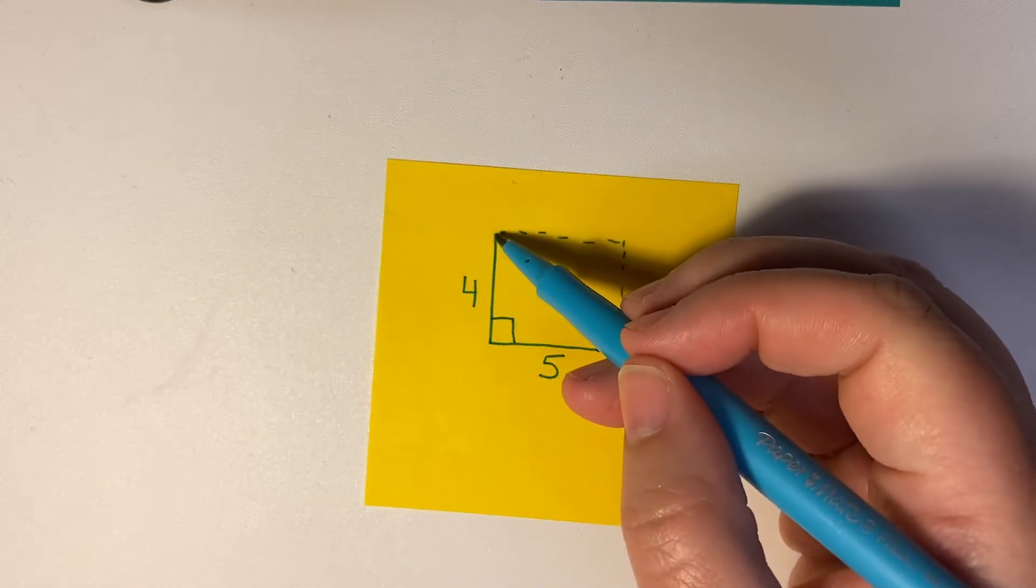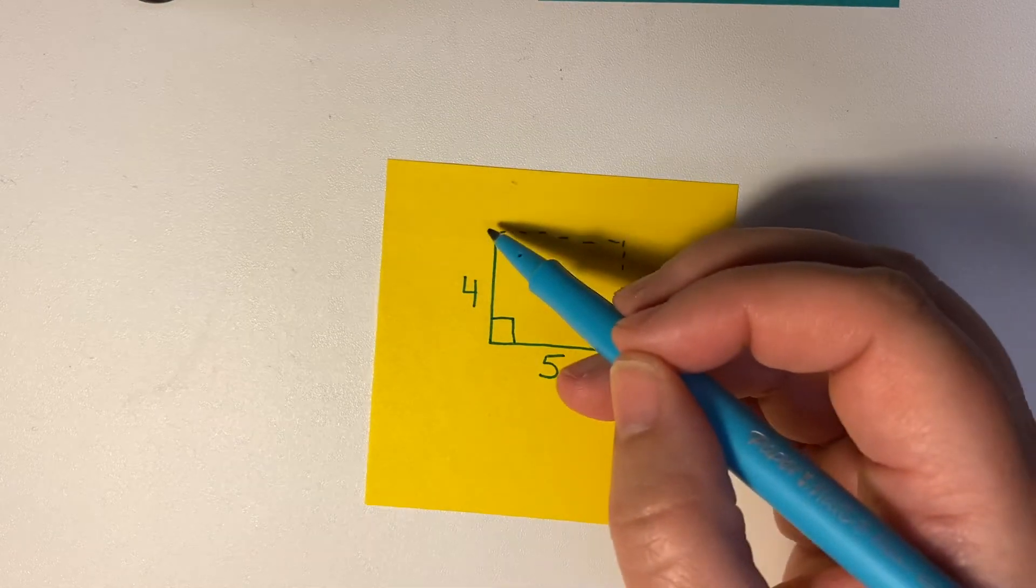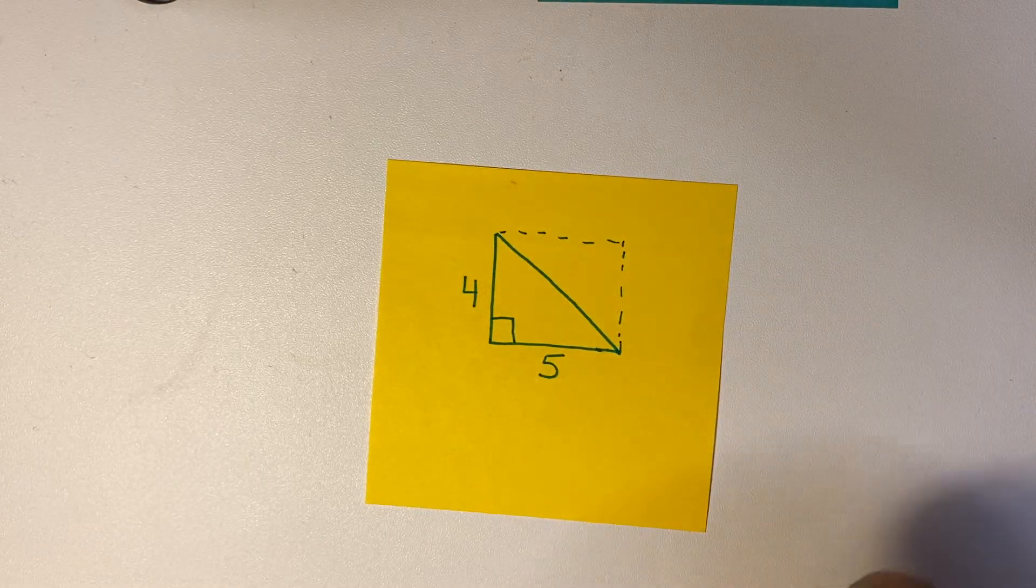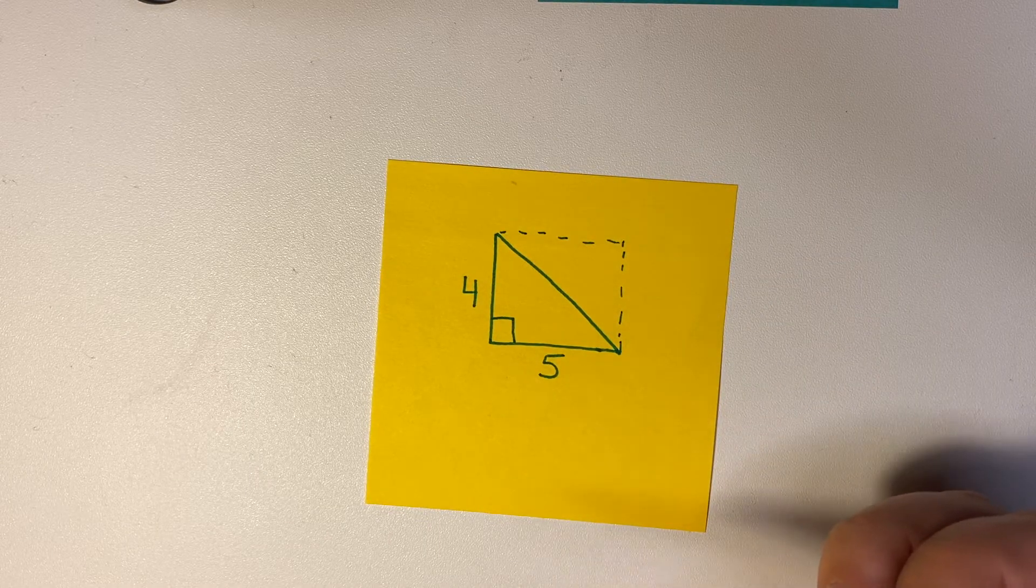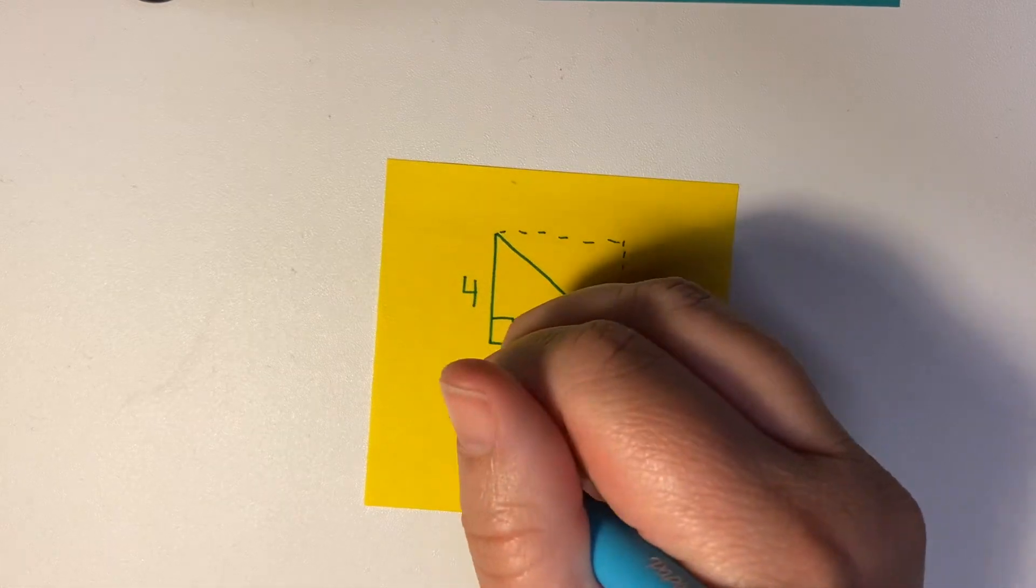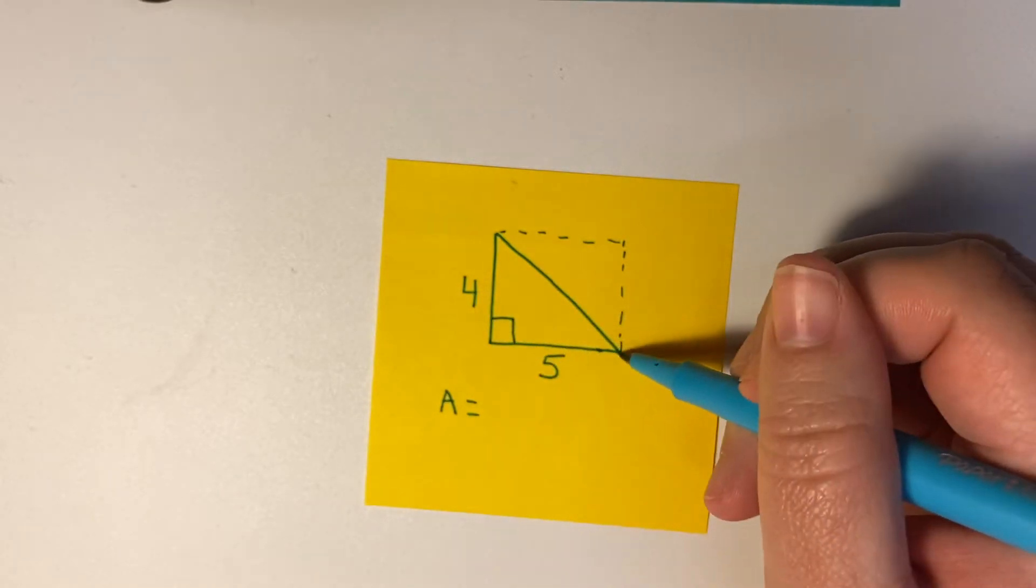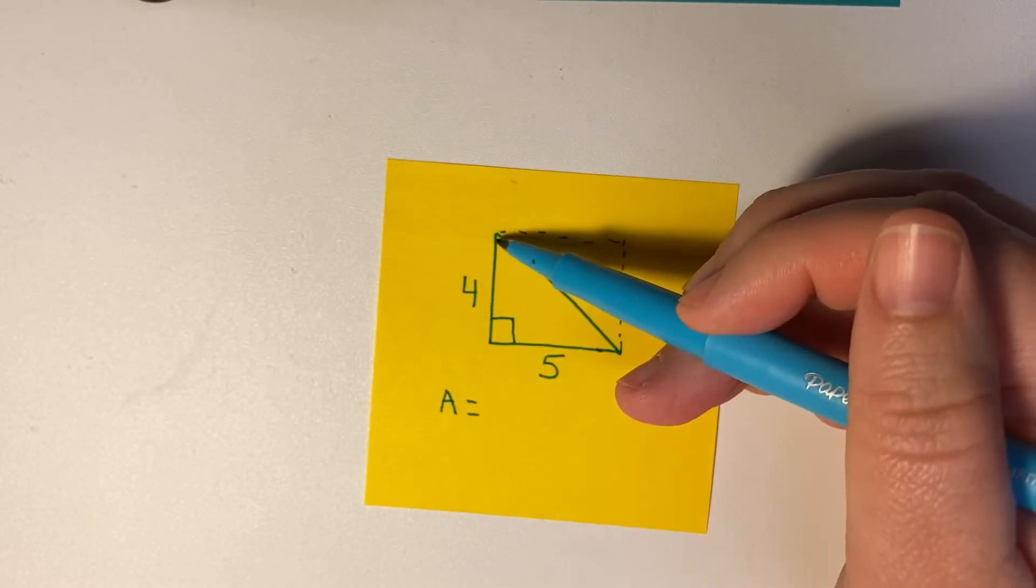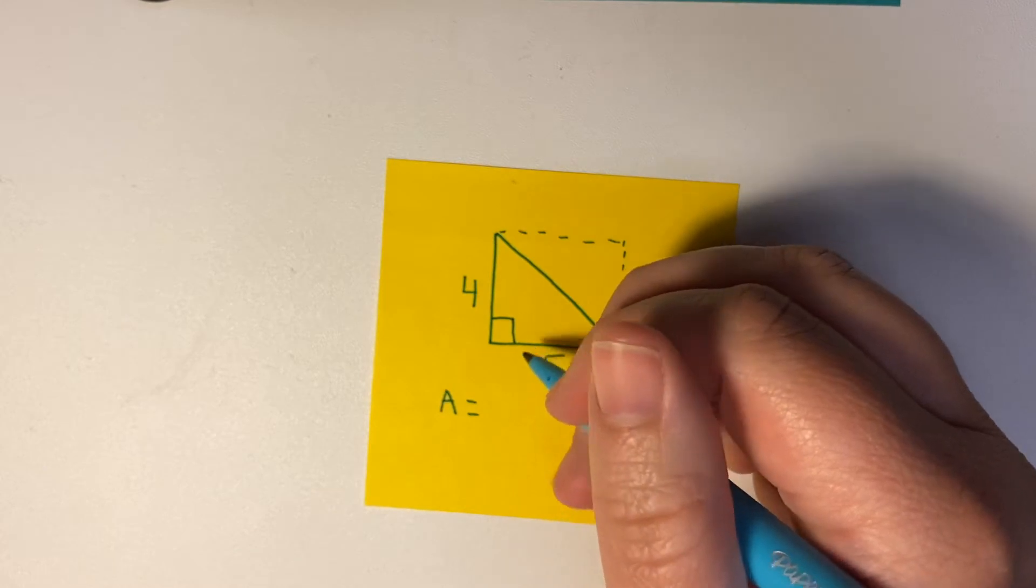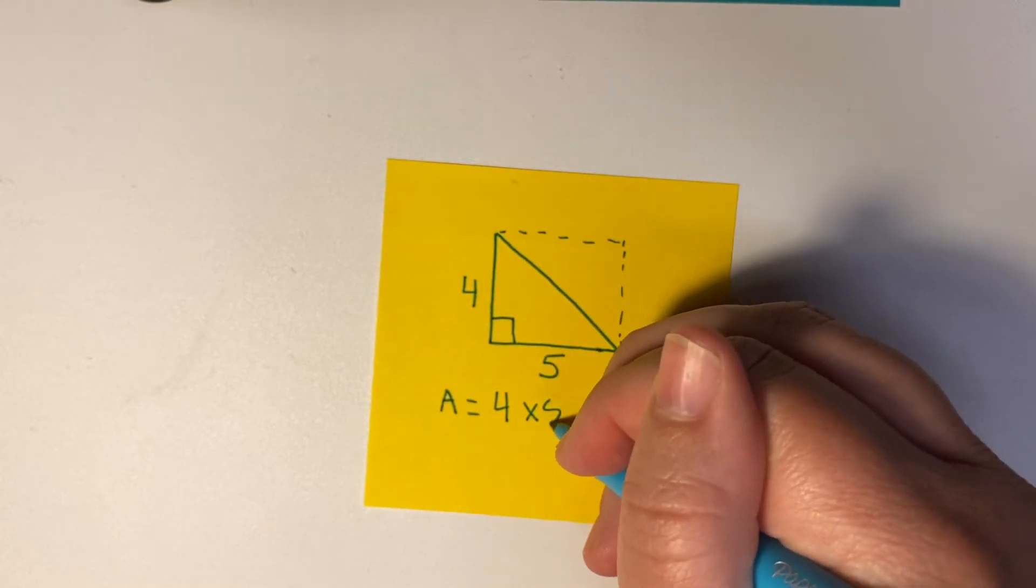But as you can see, this is actually half of that rectangle, so it's going to be half of 20 which would be 10. Now how do I find this mathematically? Well, your area is going to equal the—we're going to call this the base and we're going to call this the height—so this is going to be the base times the height, 4 times 5.